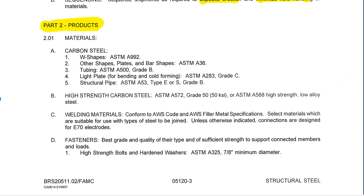When we get into products, you'll see there is a definition in the AISC code of standard practice of what structural steel is. Here we're very specific — when we're talking about carbon steel, this is where we give the grades. These are industry standards: W shapes are ASTM A992, the rest are usually A36, tubing comes in its specific grade, et cetera. So you can see how this is where specialized steel would be designated. If there's high strength steel, it would be specifically indicated on the drawing.